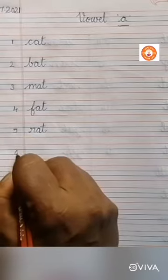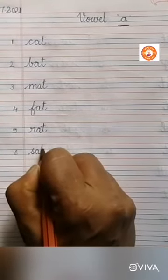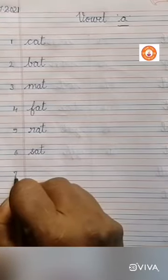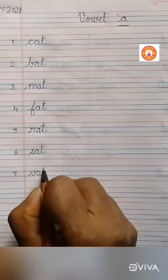Number six. S-A-T spells Sat. Seven. V-A-T spells Vat.